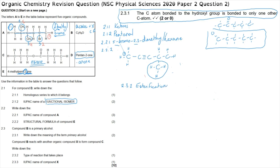Question 2.3.3 asks for the IUPAC name of compound X. The chain attached to both the single-bond and double-bond oxygen comes from the carboxylic acid. That chain contains four carbons, making it butanoic acid. Since it is a carboxylic acid used in the esterification reaction, compound X is butanoic acid.